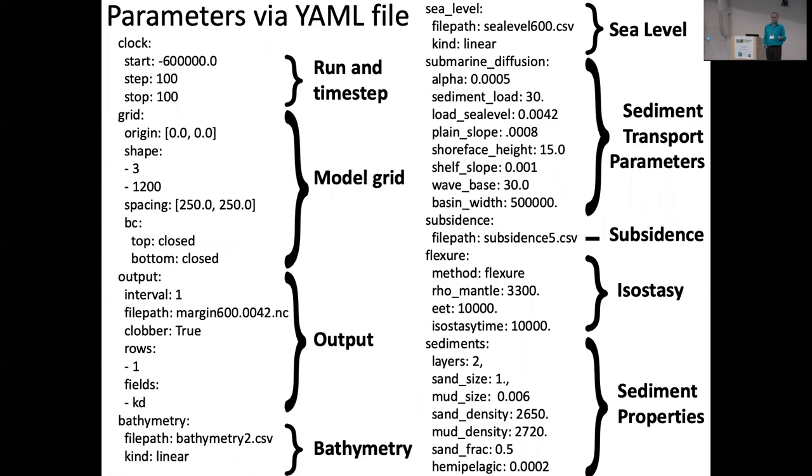So the input parameters come in through a YAML file, which is yet another markup language. So there are various sets that talk about how to time step through the model, the shape of the grid, where to output the file, which come out as netCDF files, where to get the initial bathymetry and the sea level, the subsidence, various parameters for the sediment transport, and the properties of the sediments. Probably more parameters will get added as time goes on.